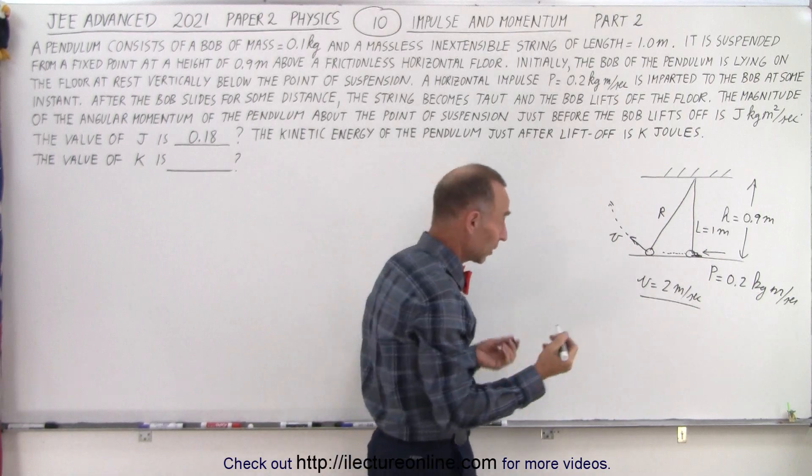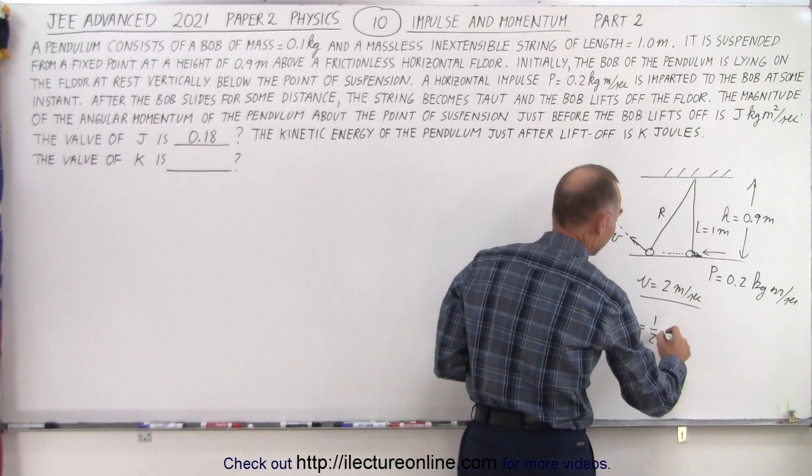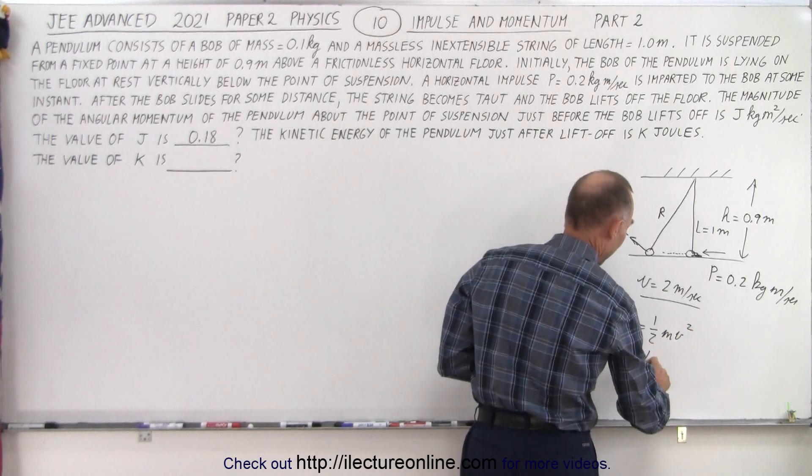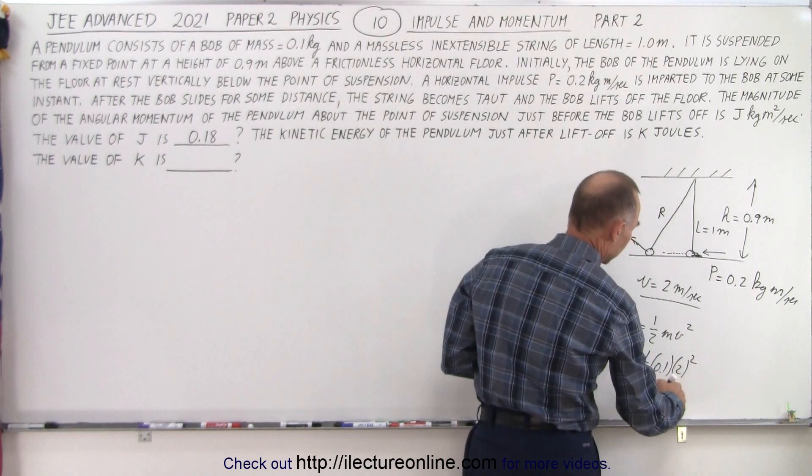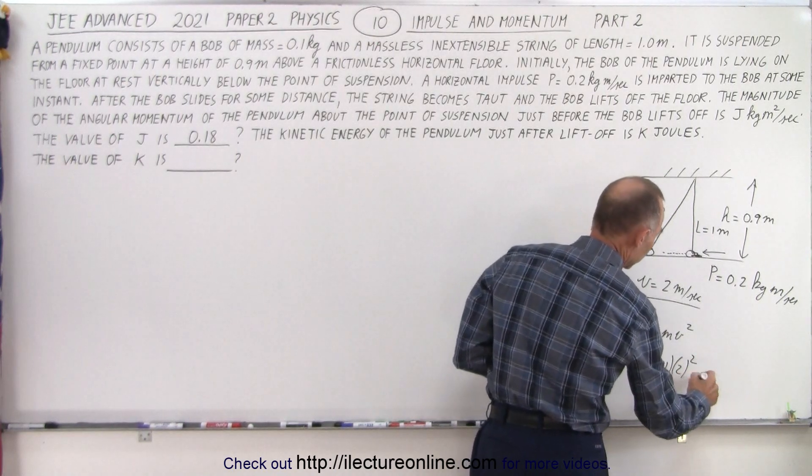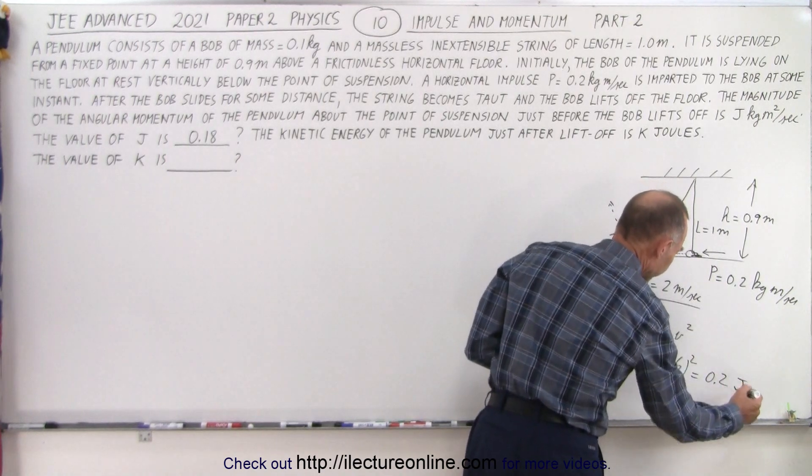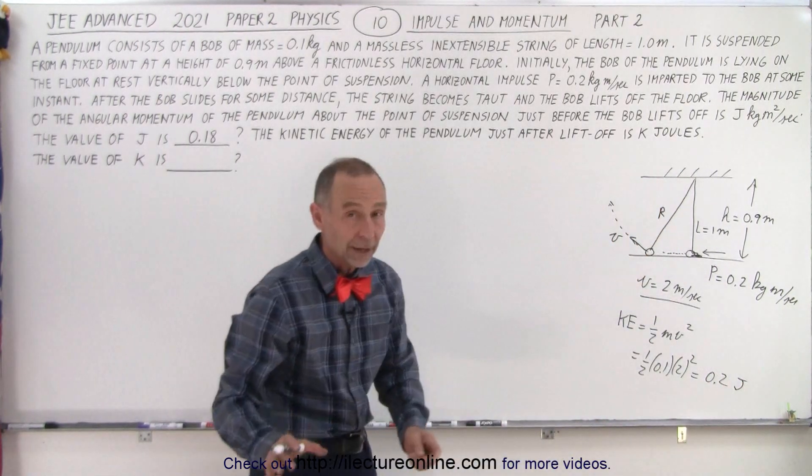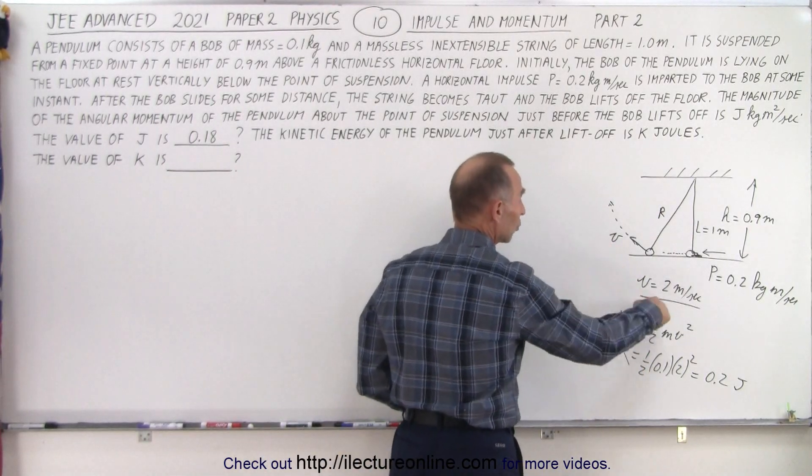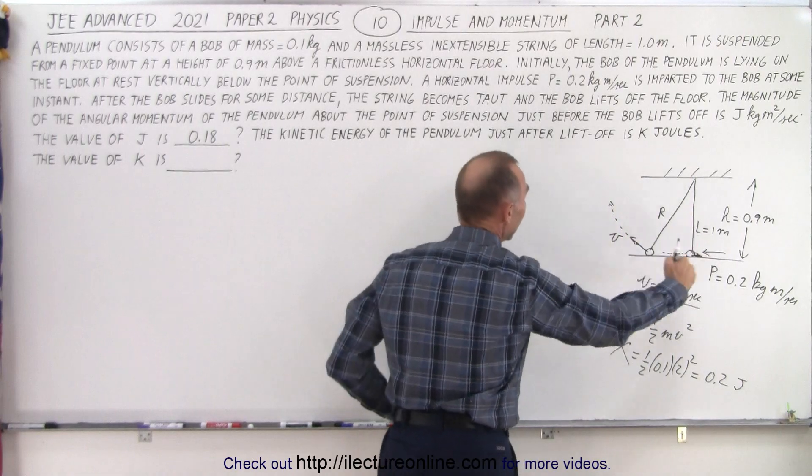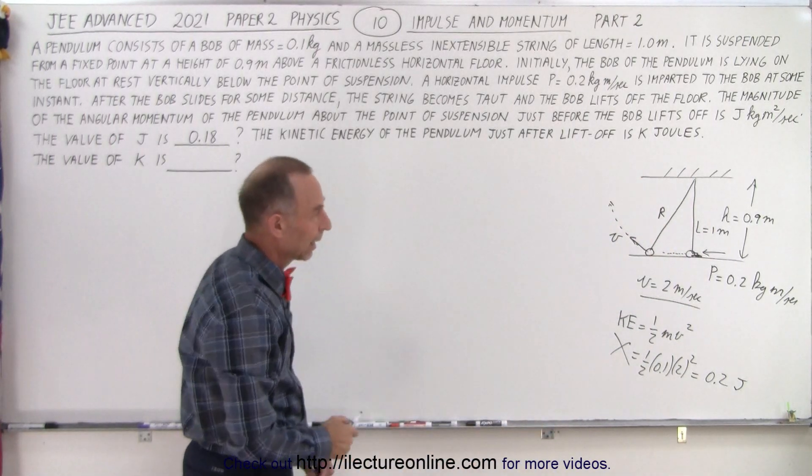And that's where you want to be careful, because kinetic energy is equal to 1/2 mv squared, and so that would be 1/2 times 0.1 times 2 squared, that would be equal to 0.2 joules. And that would be the wrong answer. That is not the right answer, because V is not equal to 2 meters per second after the string becomes taut and it's forced to go around in a circular motion path.